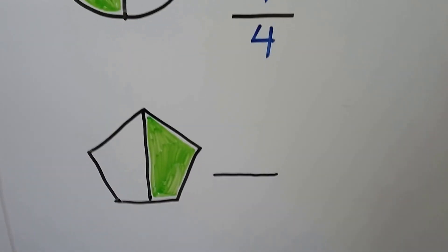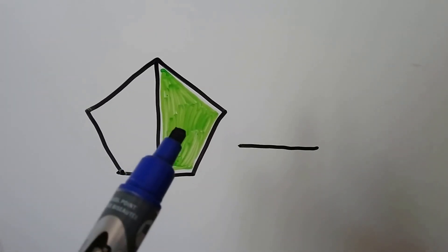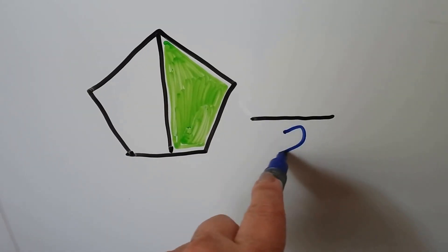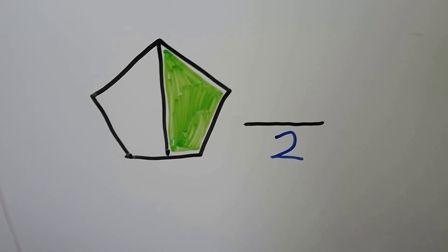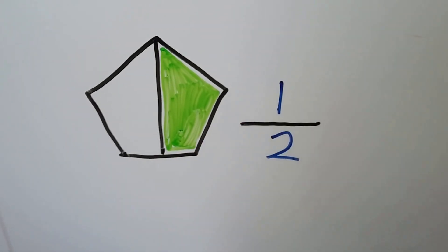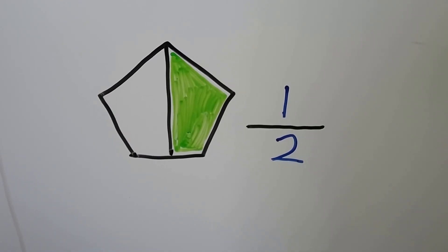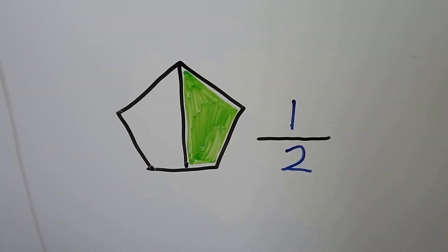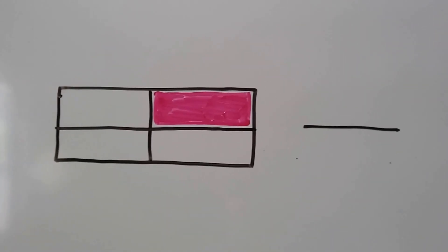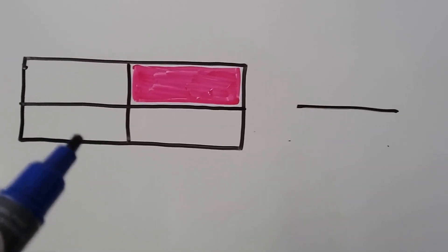Let's take a look at this one. How many equal parts are there? One, two. We write the two underneath the fraction bar. How many parts are green? Just one. Half of this shape is green — one part is green and there are two equal parts.